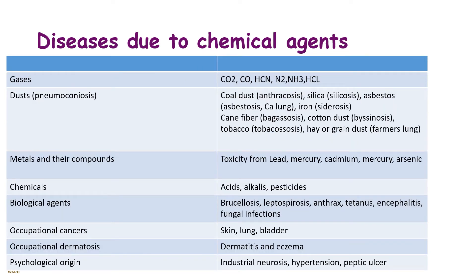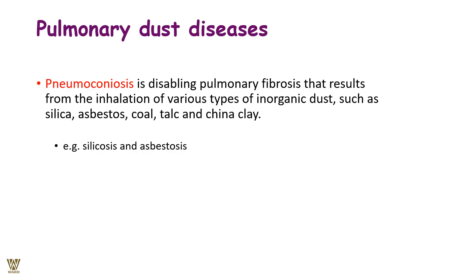Diseases due to chemical agents include: gases such as carbon monoxide, carbon dioxide, cyanide, nitrogen, ammonia, and hydrochloric acid; dust leading to pneumoconiosis — such as coal dust, silica, asbestos, iron, and cane fiber; metals, chemicals, biological agents causing toxicity from metals, acids, alkalis, Leptospirosis, anthrax, tetanus, and more. We also have occupational cancers of the skin, lungs, and bladder; occupational dermatitis such as eczema; and psychological conditions such as industrial neurosis and hypertension.